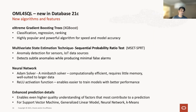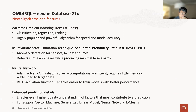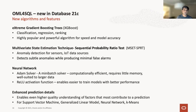What's new in 21c? Four major areas — three are mainly algorithmic areas and the fourth is better prediction details. This is not AutoML; this is core functionality inside the database itself.